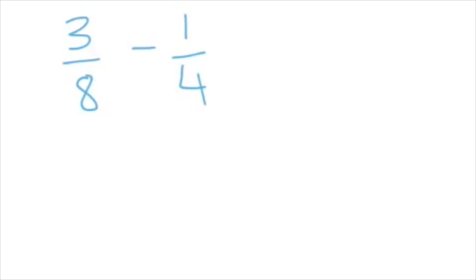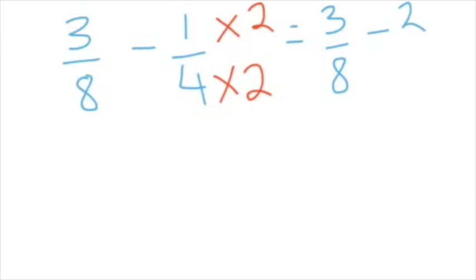So we can just change one side by multiplying this side by 2. And if we multiply the bottom of the fraction by 2, we need to do the same for the top. So let's just write that again. It becomes 3 eighths minus 1 times 2, which is 2. 4 times 2, which is 8.